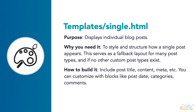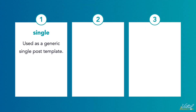WordPress will use the single.html template as a generic template for all single post types, unless they're specifically overridden by more specific templates. You can think of the single template as a fallback layout that works for many content types. However, it is possible to create multiple templates that will control post types. Here are a few of the single post types that you may need to use in your project.